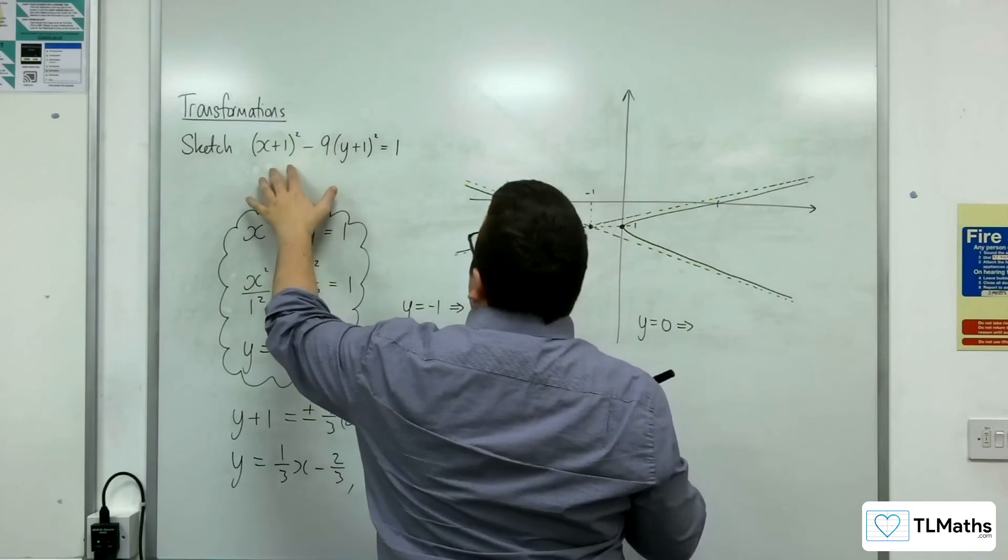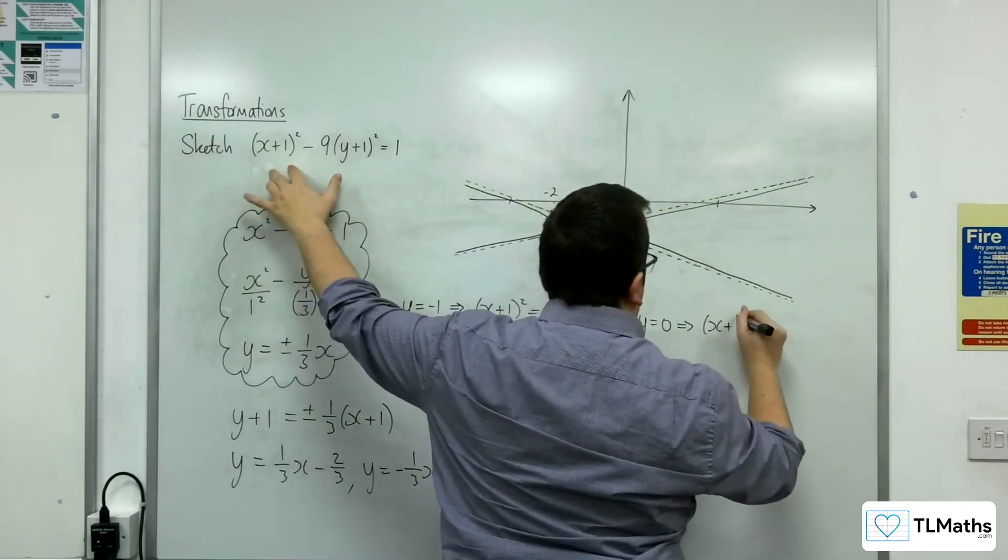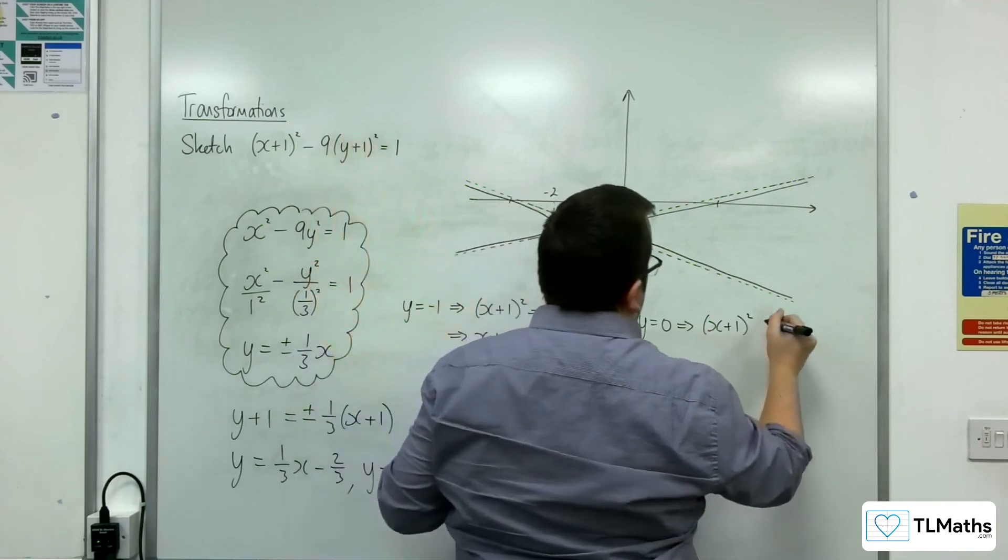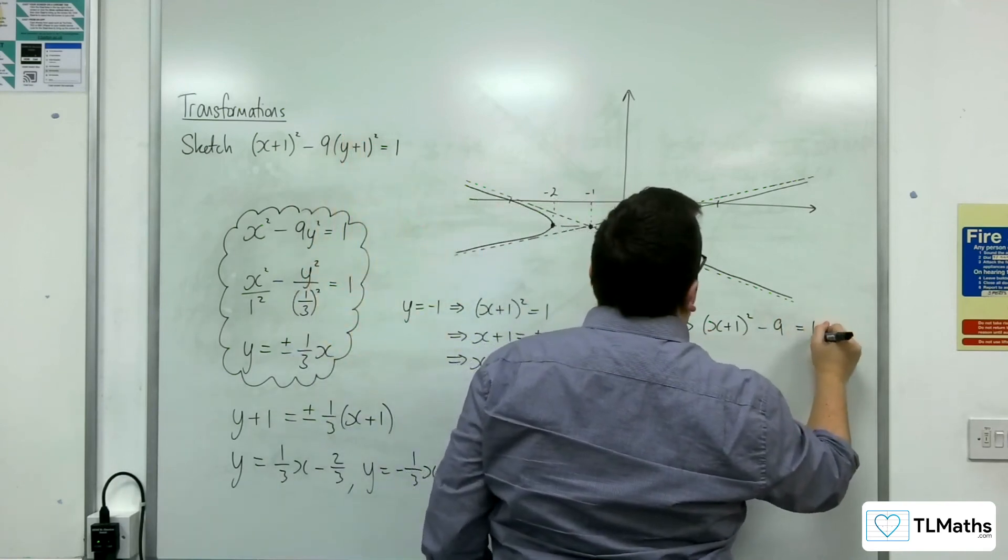we're going to get (x+1)² - 9(1)². So take away 9 equals 1.